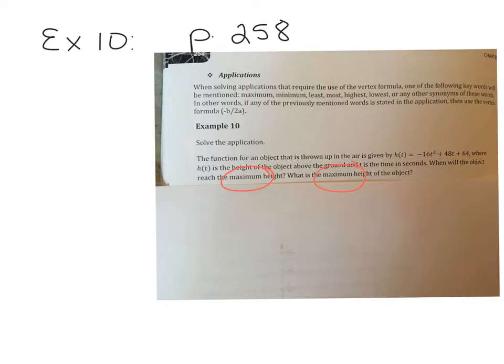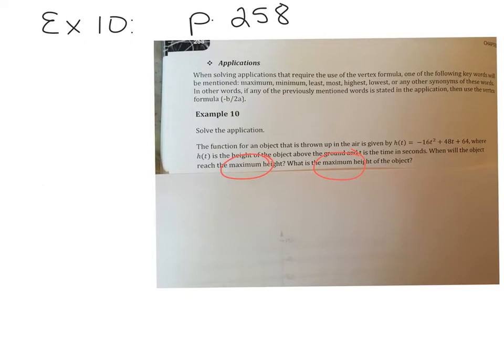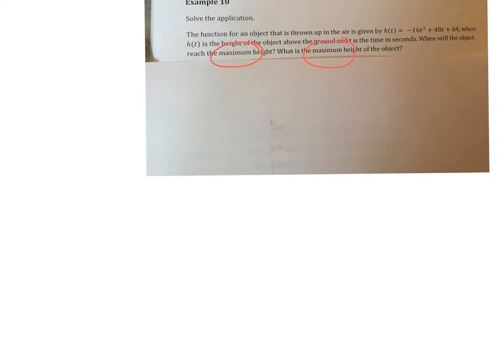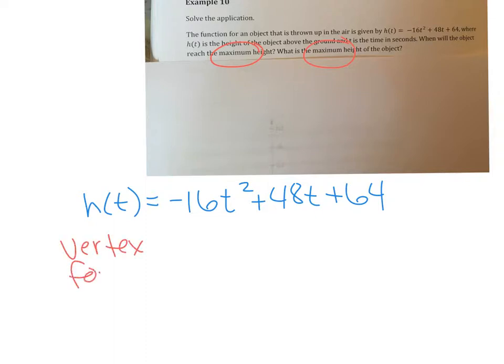So I'm just going to scroll down a little bit here and rewrite this function. h(t) = -16t² + 48t + 64. To find the maximum height, we're going to use the vertex formula. If you remember from the last video, the vertex formula is... we're going to be using t because t is the variable here equals -b over 2a.